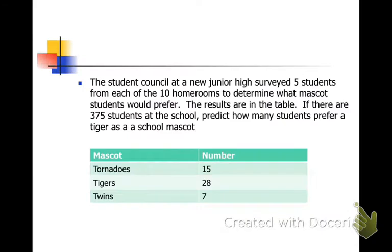Looking at this table, the student council at a new junior high surveyed five students from each of the ten homerooms to determine what mascot students would prefer. The results are in the table. If there are 375 students at the school, predict how many students prefer the tiger as the mascot.